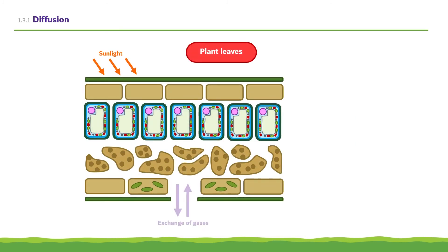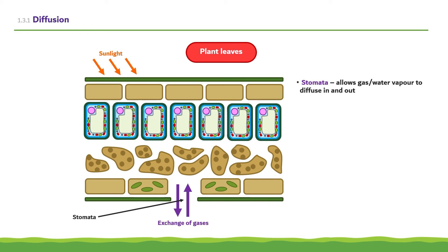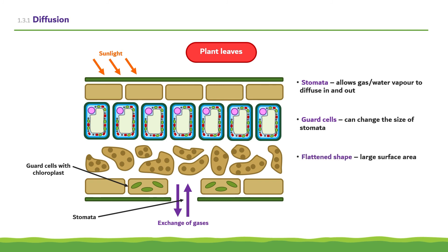In plants, gas exchange occurs in the leaves. Carbon dioxide diffuses into the leaves through small holes called stomata, and is used in photosynthesis. Oxygen produced in photosynthesis and water vapour diffuse out through the stomata too. The size of the stomata can be changed by guard cells which surround the hole — they can close the stomata if the plant is losing water too quickly for the roots to replace it. The leaf's flattened shape leads to a large surface area, and airspaces within the leaf provide greater surface area around cells for gas exchange.